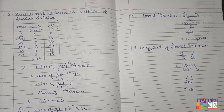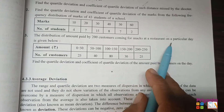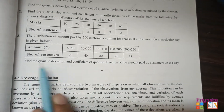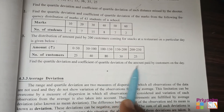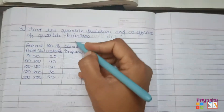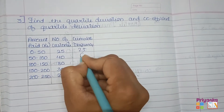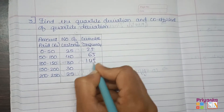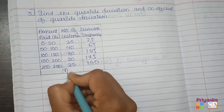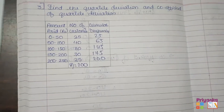Moving to the third question: the distribution of amount paid by 200 customers coming for snacks at a restaurant on a particular day is given. This is a continuous frequency distribution, and we are asked to find the quartile deviation and coefficient of quartile deviation. We first calculate cumulative frequencies: 25, 25+40=65, 65+80=145, 145+30=175, 175+25=200. So N = 200.